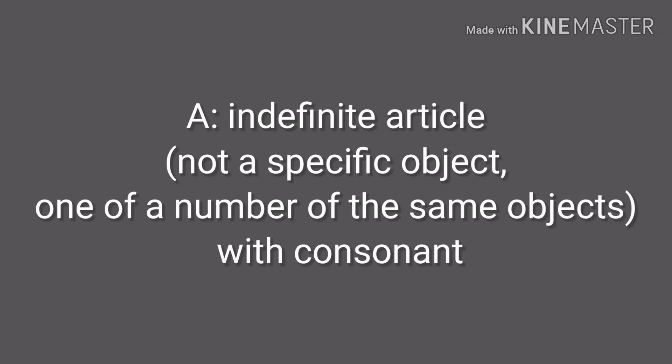We start with the indefinite article 'a'. It is not a specific object — one of a number of the same object. In Arabic, it is أداة عدم التعريف, used when speaking about something unspecified (not a specific object), or one of a group. It is used with consonants — that is, words beginning with consonant sounds.